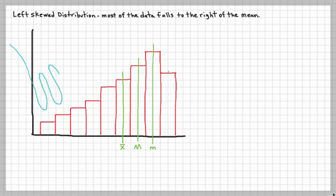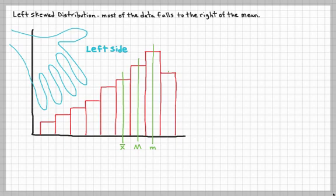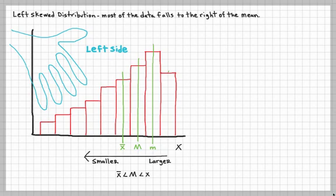If someone gives you a graph and wants to know if it's left or right skewed — think of your hand squishing the left side. That's not a math term, but it's a helpful visual. The proper way is to understand that on the X axis, smaller is on the left and larger is on the right. For left skewed, X-bar is smaller than the median, and the median is smaller than the mode. That is the proper way of knowing if the data is left skewed.